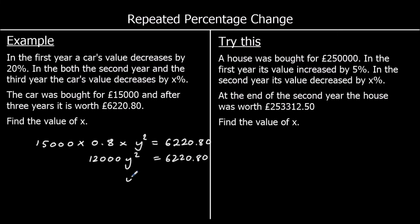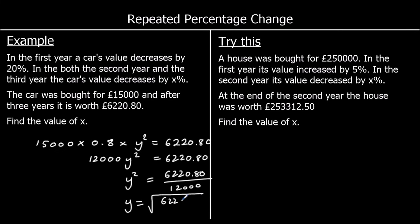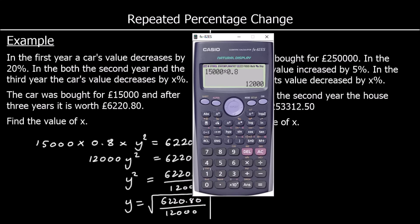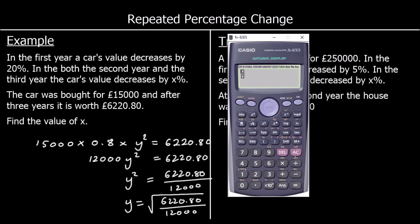Let's divide both sides by 12,000. Then we've got Y squared, so to get Y by itself — our multiplier — we square root. We're going to type this into the calculator: square root of £6,220.80 over 12,000. And that's 0.72.